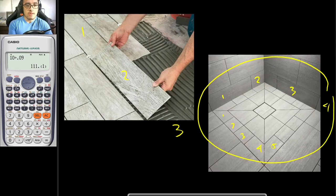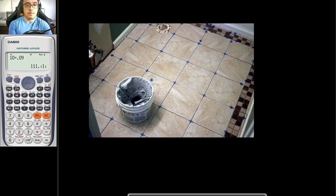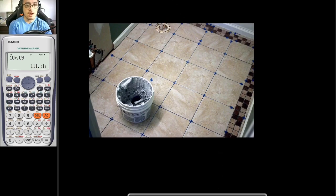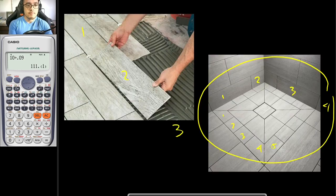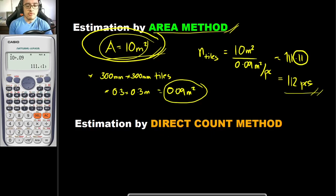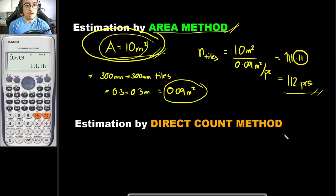For area method, it is advisable to use it if your tiles are in a basic pattern, not a complex one. But once again, your direct count method would be more accurate than your area method, while your area method would be much easier than your direct count method. So if you want accuracy over time, use direct count method. But if time is of the essence, use area method.